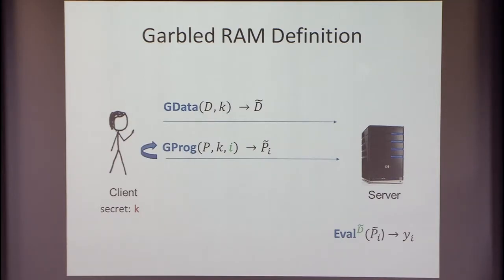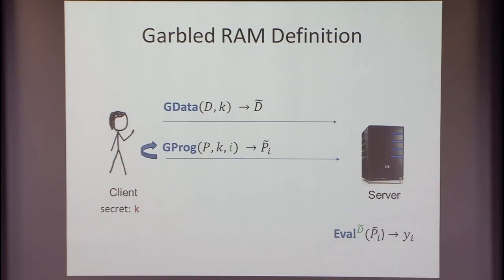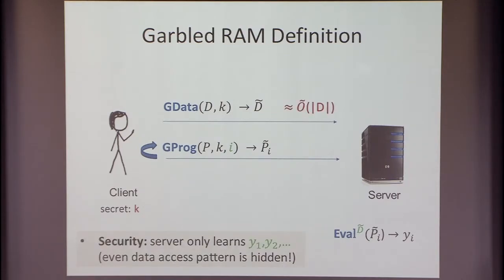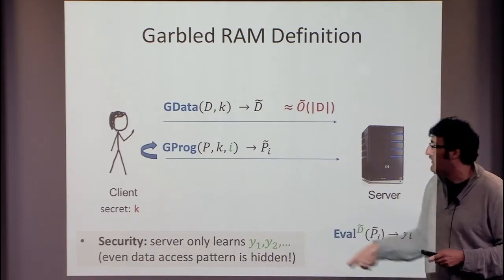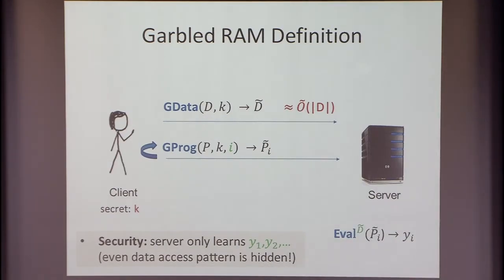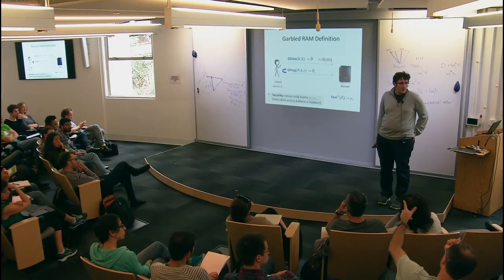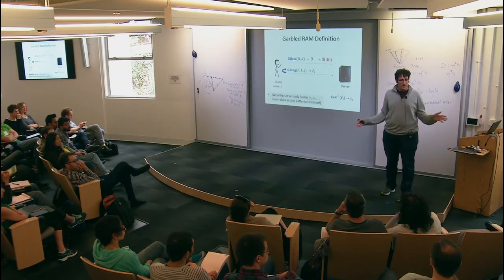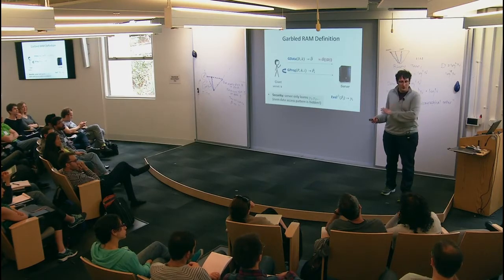When the client garbles programs, he also includes the index i — the order — and the server can only execute them in that order. The security property is that the server will only learn the outputs y1, y2, y3, and nothing else. These are the outputs from running the programs in correct order. The main difference from garbled circuits is going to be the efficiency considerations. Garbling the data should take time proportional to the size of the data (hiding log factors and security parameters). Garbling the program should take time proportional to the RAM runtime, as should evaluating the program.